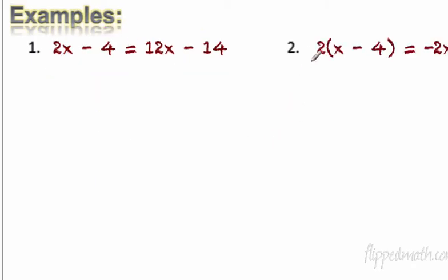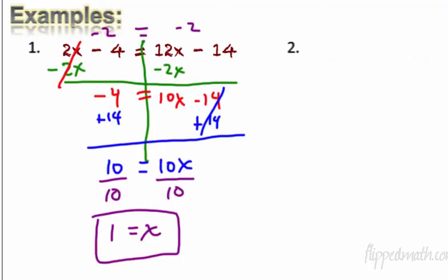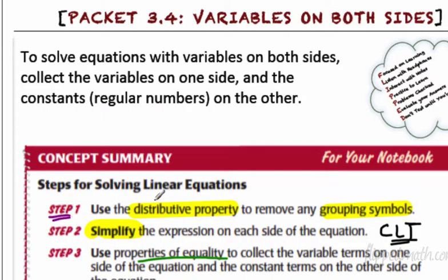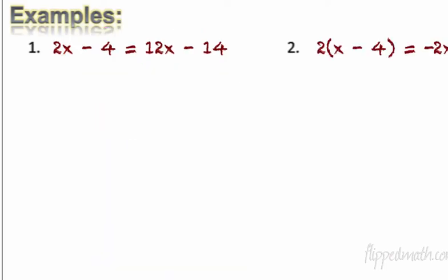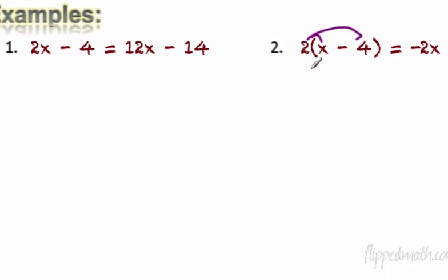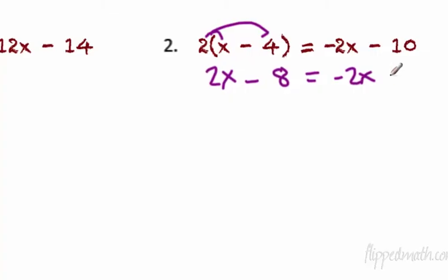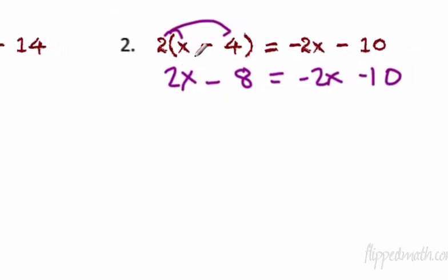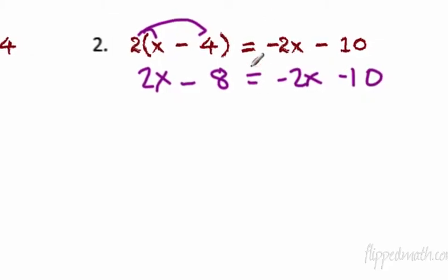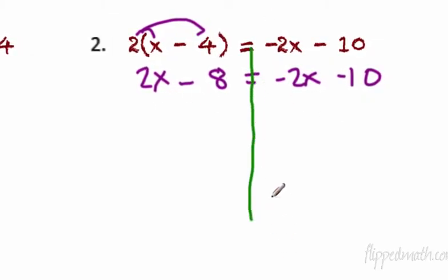Let's go to number 2. We're looking at 2 times the quantity (x minus 4) equals negative 2x minus 10. Going back to the steps, Step 1 says use the distributive property. So we get 2 times x is 2x, minus 8, equals negative 2x minus 10. That's what we get after we distribute. The right-hand side stays the same.